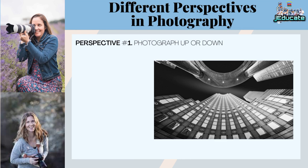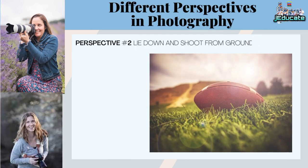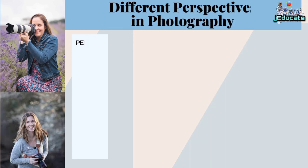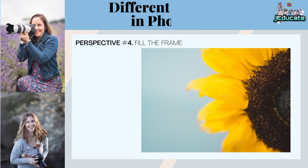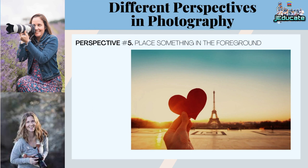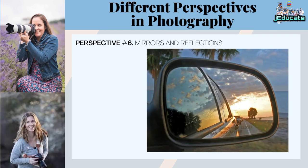Different Perspectives in Photography: Perspective 1 — Photograph up or down. Perspective 2 — Lie down and shoot from ground level. Perspective 3 — Photograph through objects. Perspective 4 — Fill the frame. Perspective 5 — Place something in the foreground. Perspective 6 — Mirrors and Reflections.